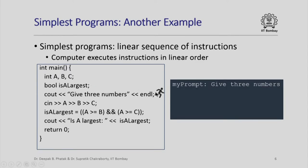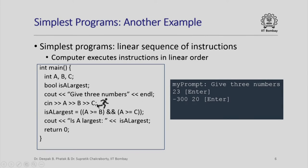The next statement is the real statement the computer executes, shown by the running icon. When it executes, we get a message on the screen followed by an end line, so the cursor returns to the beginning of the next line. After that the computer executes the statement reading the values of a, b, and c. Suppose the user enters 23 and presses Enter — that gives the computer only the value of a — then enters minus 300, space, 20, and Enter to provide b and c.